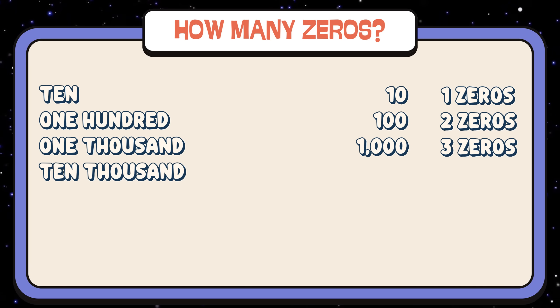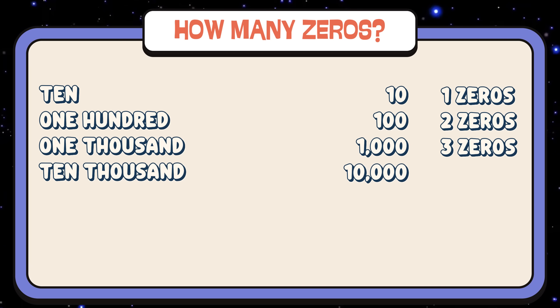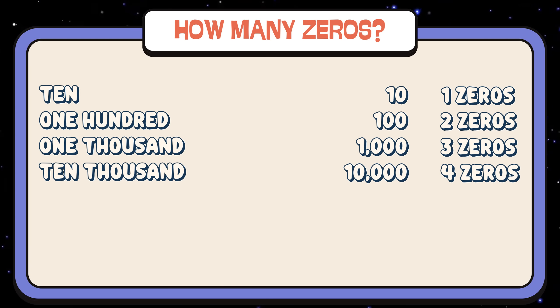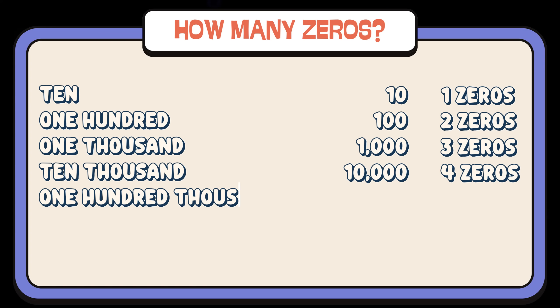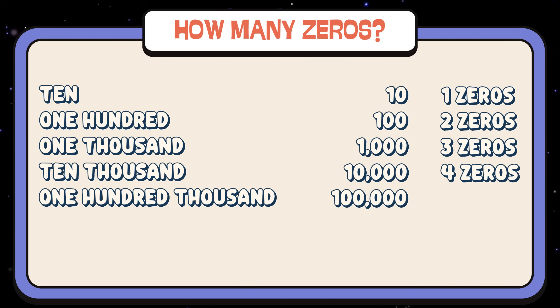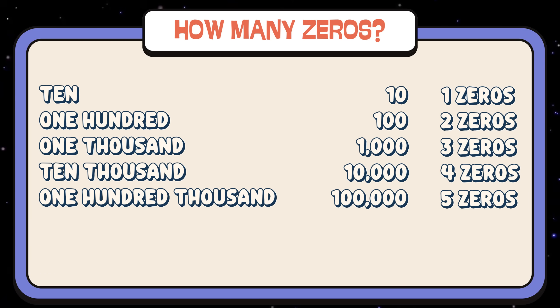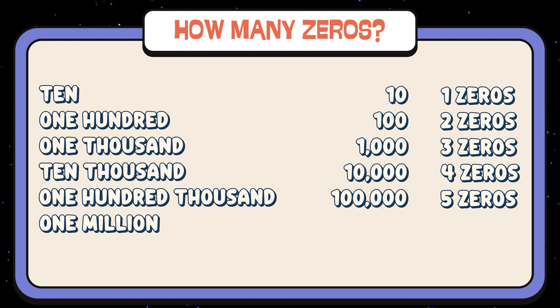Ten thousand — four zeros. One hundred thousand — five zeros.